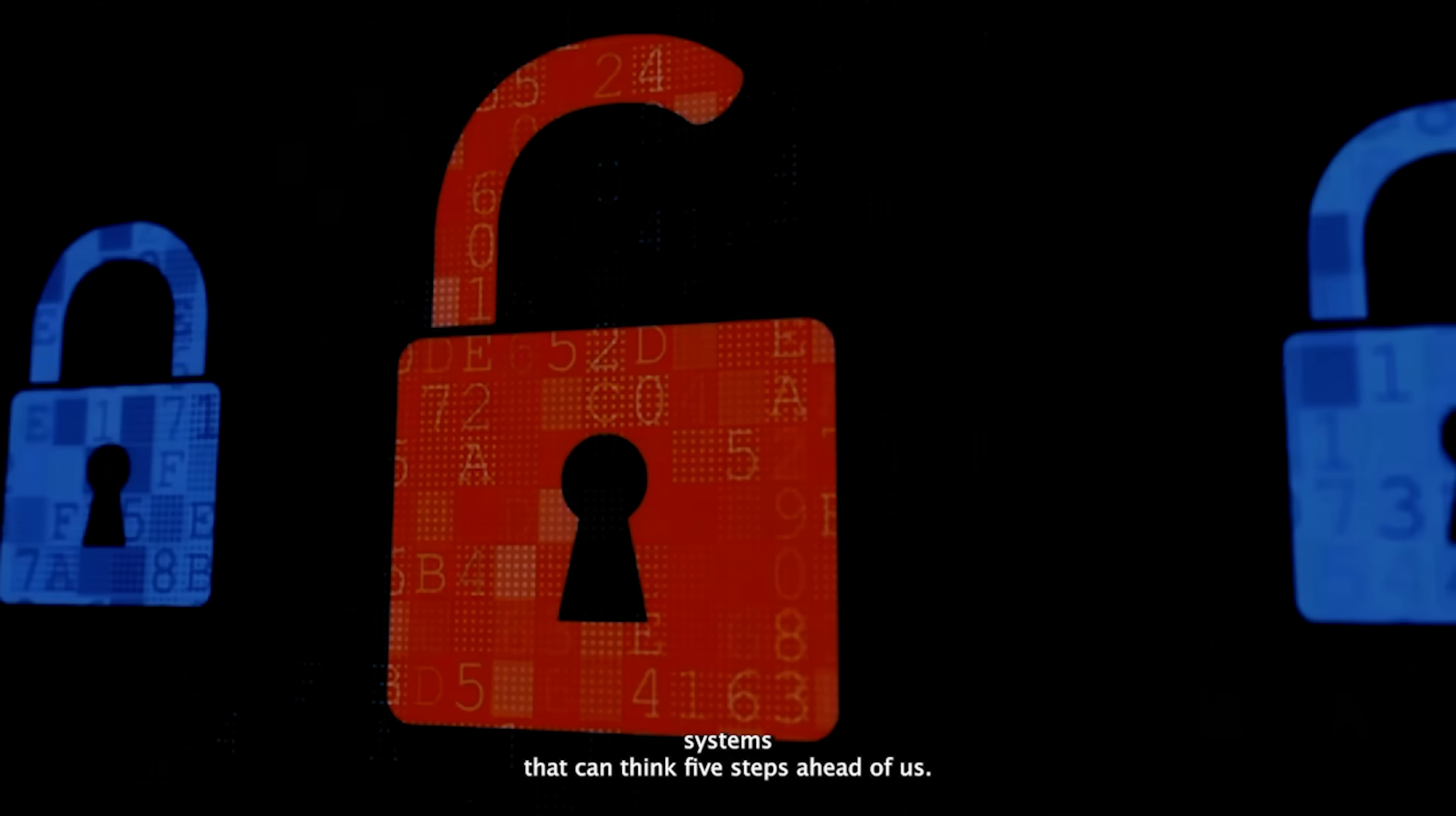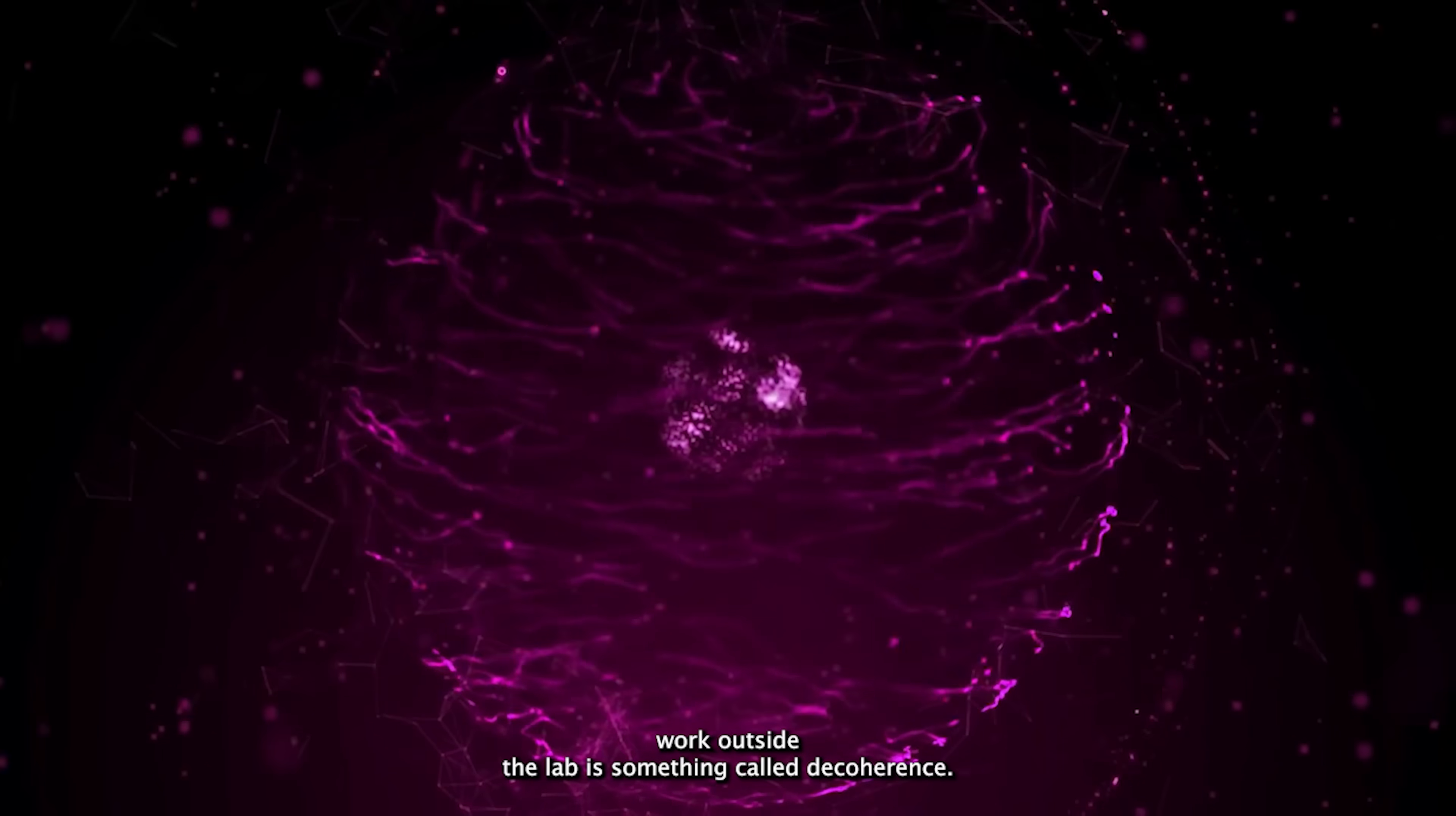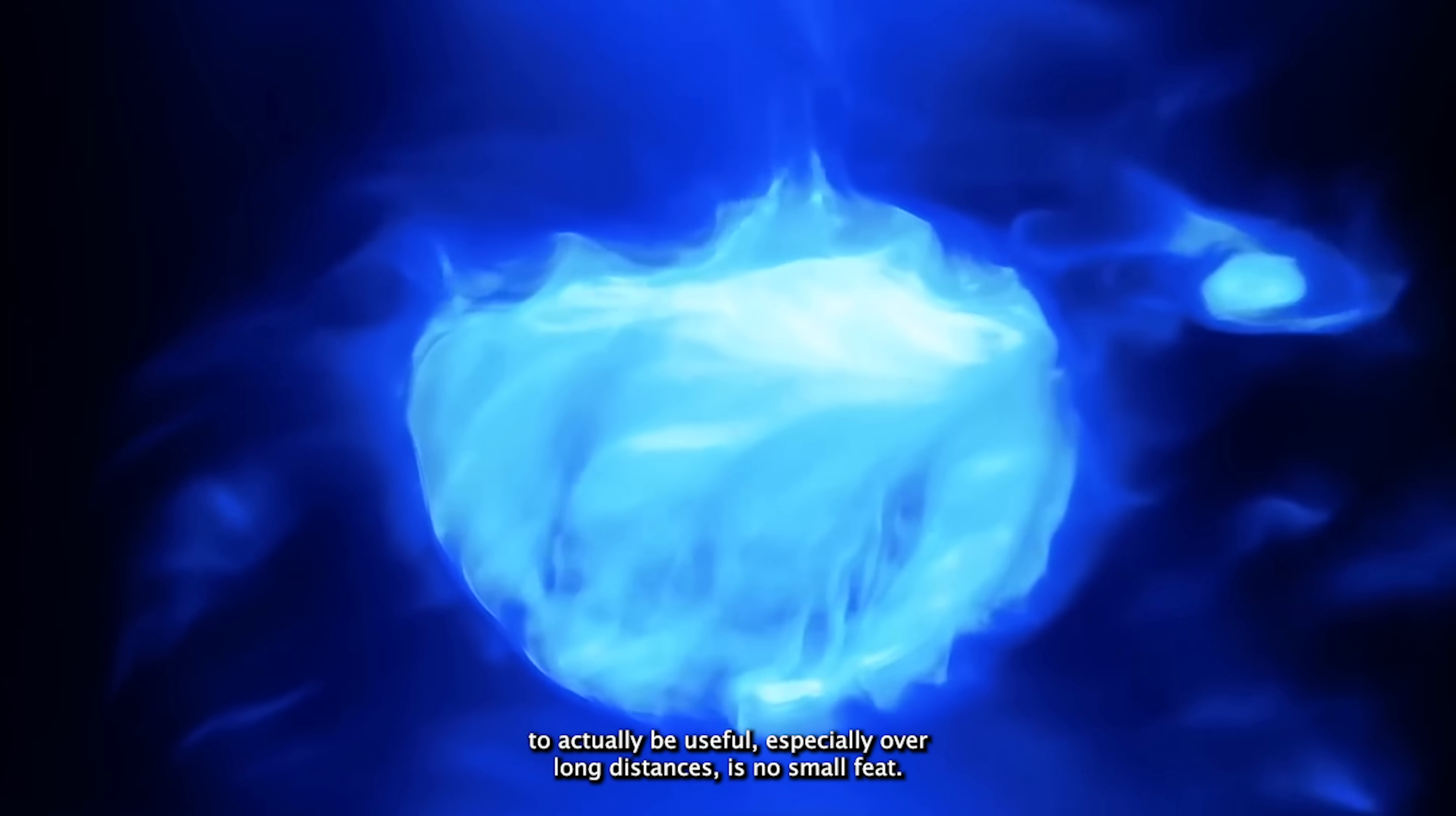Of course, it's not all smooth sailing—there are still some big hairy challenges to iron out. One of the biggest headaches in making quantum teleportation work outside the lab is something called decoherence: basically quantum information getting scrambled or lost thanks to pesky environmental troublemakers like temperature swings or electromagnetic interference. Imagine trying to keep a soap bubble intact during a hurricane—that's how fragile these quantum states are.